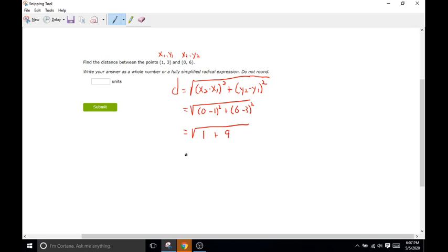So just 1 plus 6 minus 3 is 3 and then 3 squared is going to be 9. So we have 9 plus 1. Okay. Square root of 10.